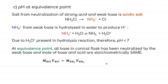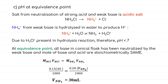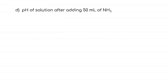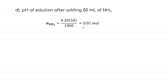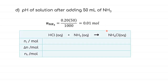Substituting all known values into M_acid·V_acid = M_base·V_base, we get the volume of NH₃ at equivalence point = 30 mL. So the equivalence point coordinate is 30 mL of NH₃ with pH less than 7. The next part asks for the pH after adding 50 mL of NH₃. We calculate the new moles of NH₃: 0.20 × (50/1000) = 0.01 mol. The previous moles of HCl (the analyte) are 6.0 × 10⁻³ mol.